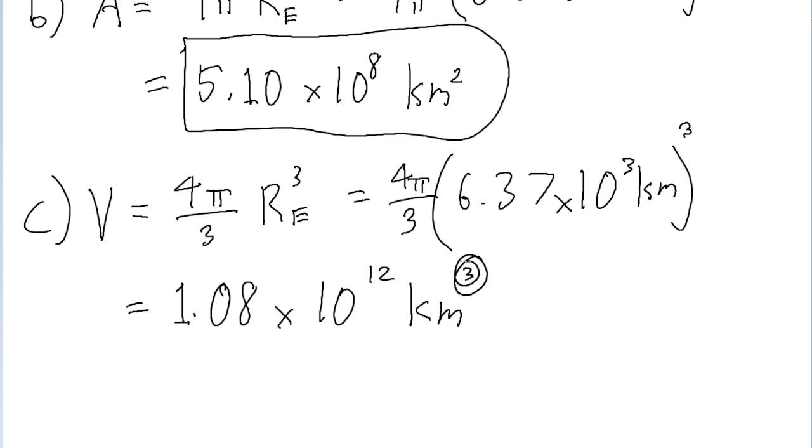And again, don't forget to include the exponent, because that's very important to defining what the units are. And so, that is our volume. That's the volume of this approximated Earth. And so that's the answer for part C. And that is the answer for all three parts of the problem.